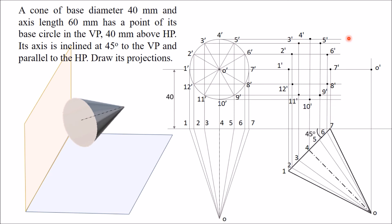Once all the points are obtained, draw a smooth curve through them. When viewed from the front, the base is invisible, while all outer lines are visible. Therefore, draw the outer contour as solid lines and all other internal points with dashed lines. The shape of this figure will be elliptical. Once you get the ellipse, from O' draw a line which is tangent to the ellipse — do not simply join O' to point 4'. Draw the tangent line on both sides to complete the front view.